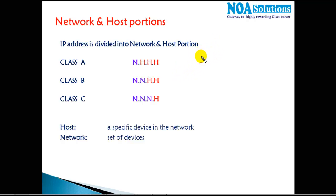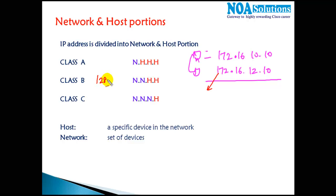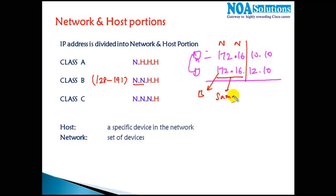Another example: two computers with addresses 172.16.10.10 and 172.16.12.12. The question is whether they belong to the same network or different network. First identify the class: 128–191 is Class B. In Class B there are two network portions. Both addresses share 172.16 as the first two portions, which are the same — so these devices are on the same network.